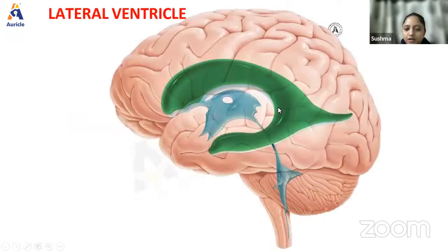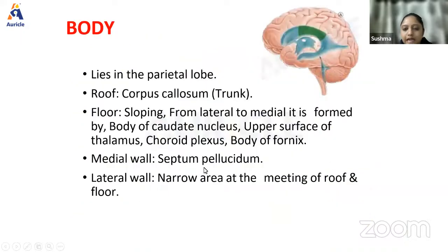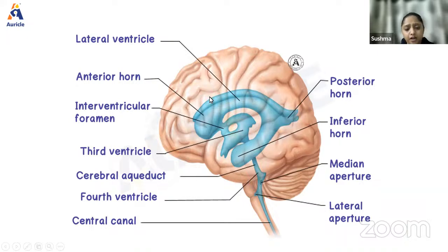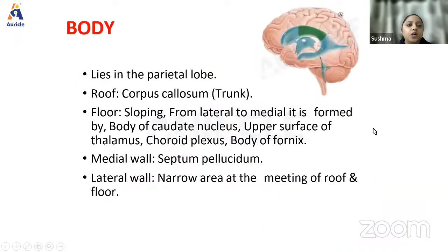Let's talk about the lateral ventricle — the structure marked in green. The lateral ventricle has an anterior horn, a posterior horn, and an inferior horn. The relations of all three horns are extremely important and are asked in examinations. Let us first look at the body of the lateral ventricle. This is the frontal lobe, occipital lobe, temporal lobe, and parietal lobe. The body of the lateral ventricle lies in the parietal lobe.